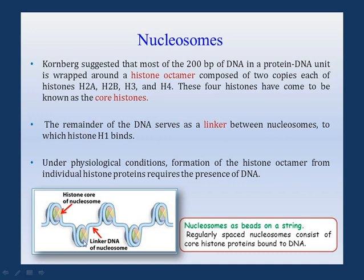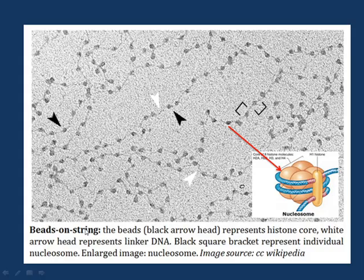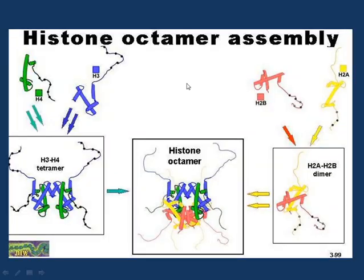The remaining base pairs form the linker DNA joining the two nucleosomes. In this linker DNA, histone H1 acts as a clamp which holds the DNA on the nucleosome. This is the electron micrograph picture which shows the bead-like structure — this is the nucleosome structure with the string of DNA.